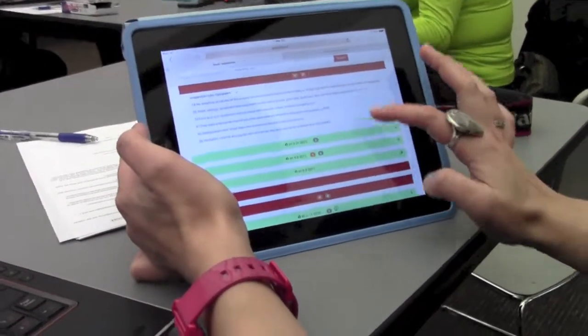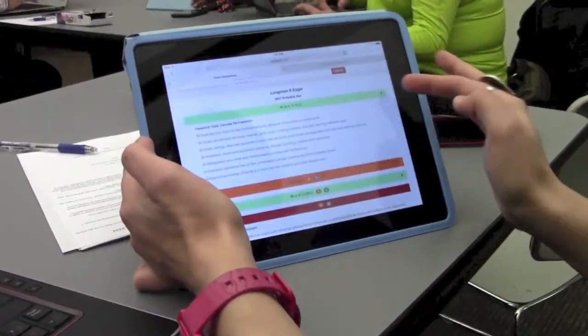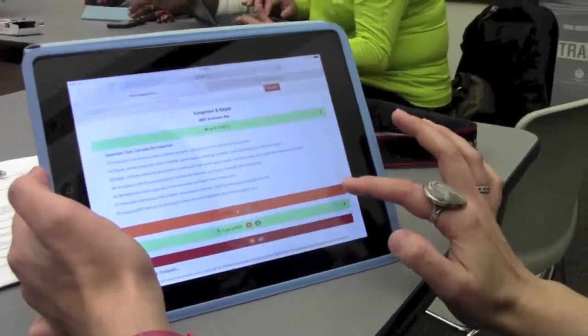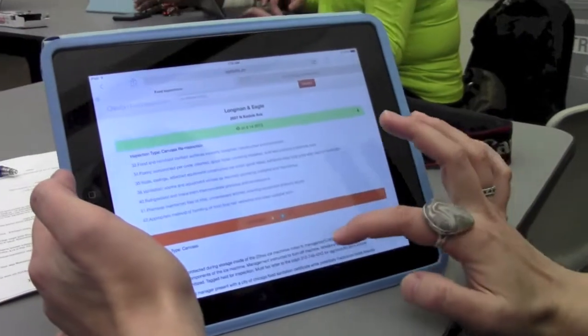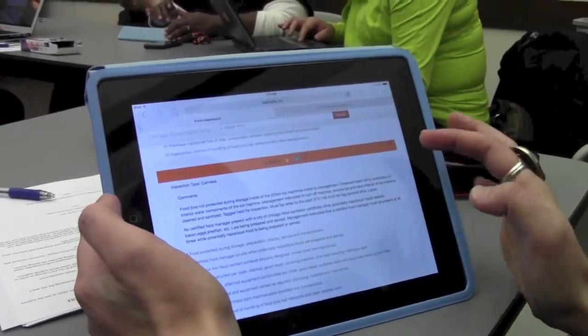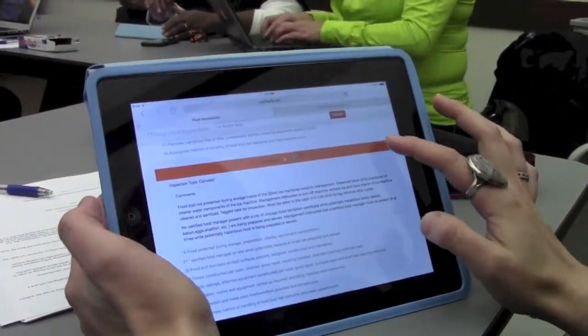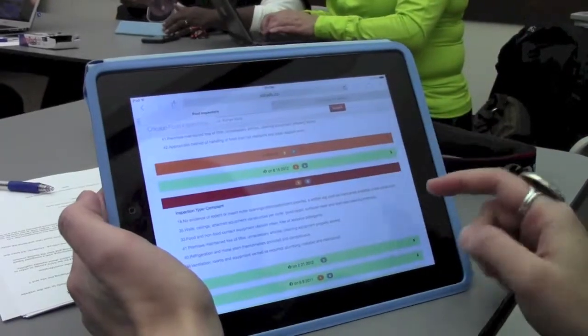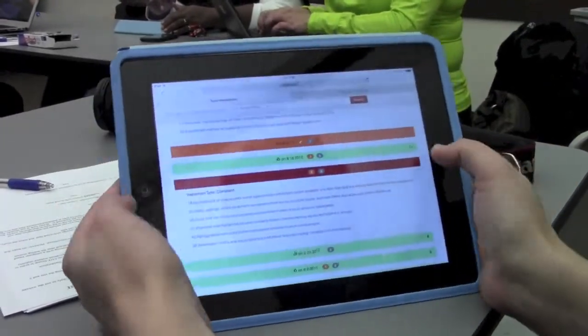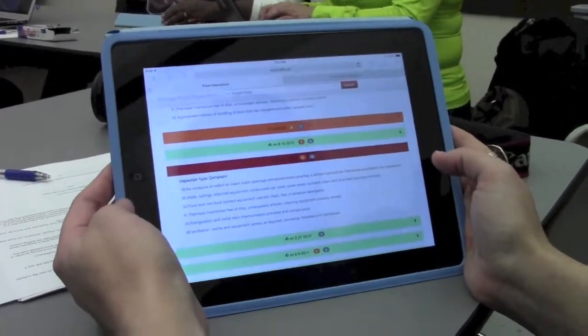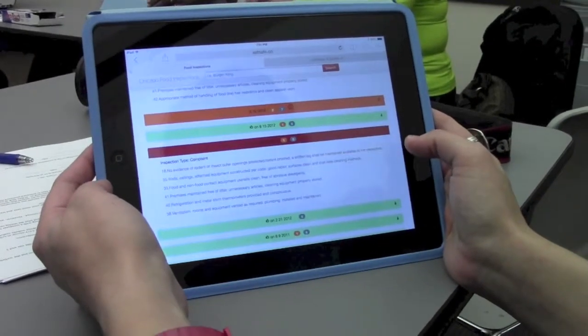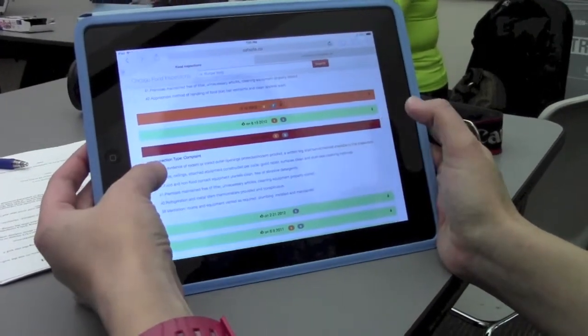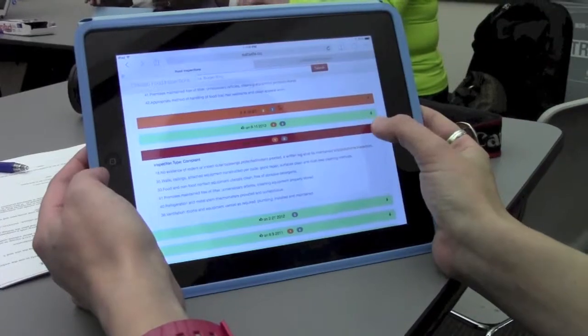So it's giving me the most recent inspection that they passed. I'm assuming this here was not a critical violation since it's orange and not red. So I scrolled down to the red one to see what the violation was that made it red. No rodent proofing kind of stuff.